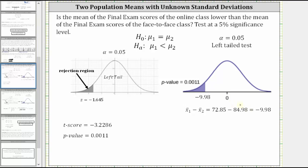And then the difference of the sample means is negative 9.98, which is shown here on the left of zero on the horizontal axis. So the p-value is equal to this shaded area here, which is also equal to the probability that the difference of the means is less than or equal to negative 9.98.